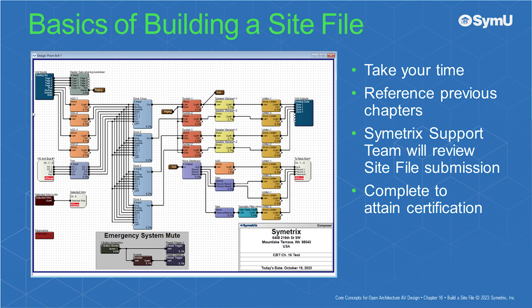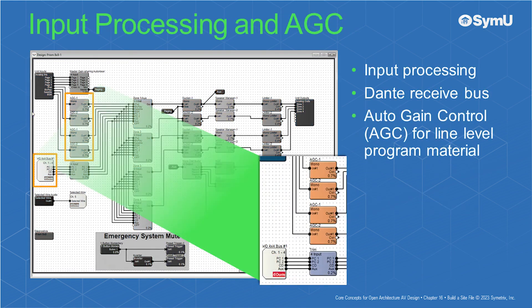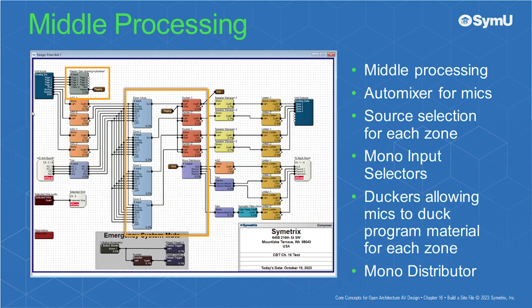Complete the site file and submit it to the Symmetric Support team. They will review your submission and when satisfactory, provide composer certification. The site file will contain input processing including a Dante receive bus and auto gain control for line level program material. The middle processing contains an auto mixer for microphones, program material source selection for each zone using mono input selectors, duckers to allow microphones to duck the program material for each zone, and a mono distributor.